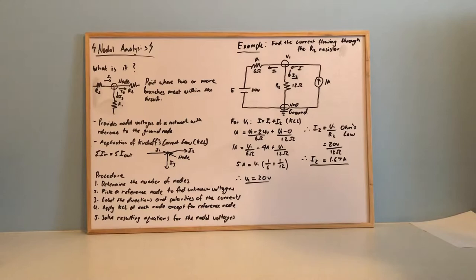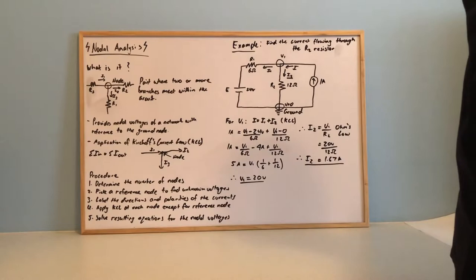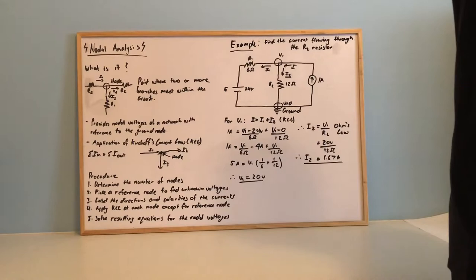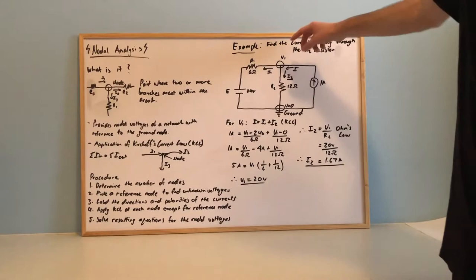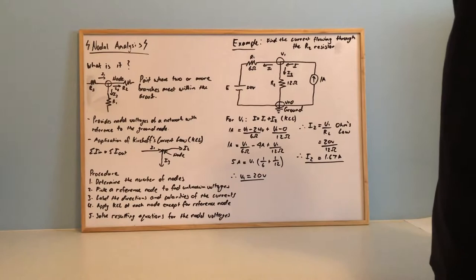So we have an example here. Find the current flowing through the R2 resistor. We have an unknown node voltage here of V1. To establish this we need to use Kirchhoff's current law within that node to identify the voltage. We already have one amp flowing into the node which we consider to be positive, and we have I1 and I2 exiting the node which can be seen as negative.